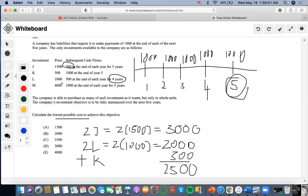For this one, it says investment M: 4,000 at the end of each year for five years. That's fully covered at a price of four thousand.